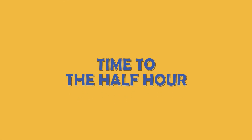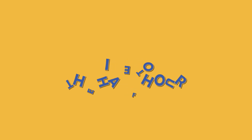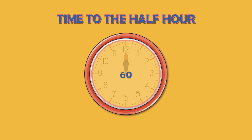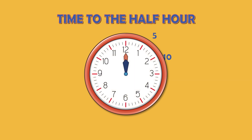In this lesson, you will learn about telling time to the half hour. Here we have some times to the half hour. The whole hour is 60 minutes, so half of 60 is 30. So: 5, 10, 15, 20, 25, 30.